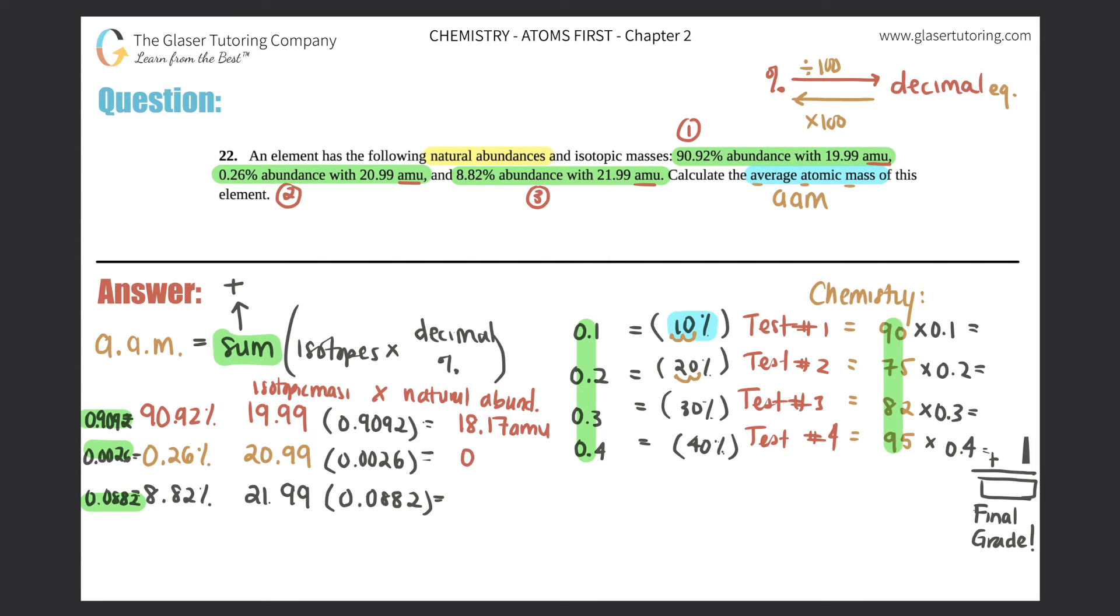20.99 times 0.0026. You get 0.0026. Now, there should be two sig figs here. So, 0.055 AMU.